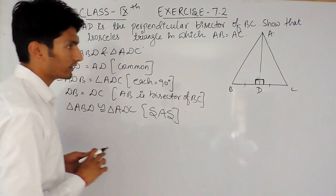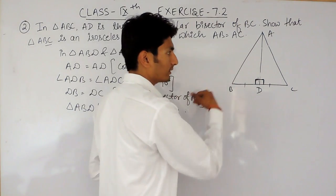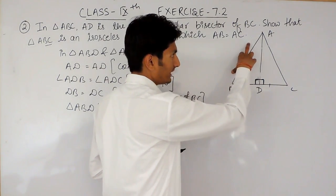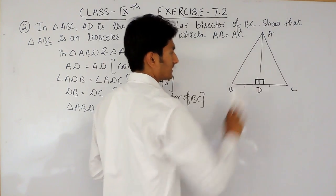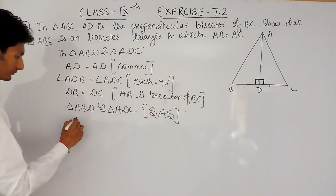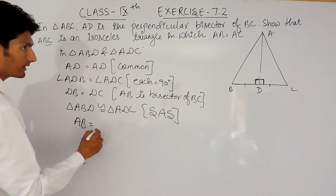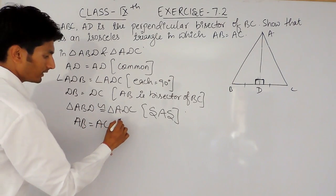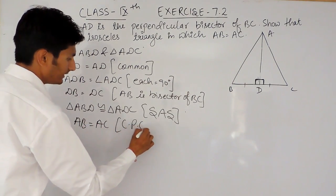Now, if these two triangles are congruent, so obviously the remaining three parts must also be equal. So this side will become equal to this side. So AB will become AC. This is by CPCT.